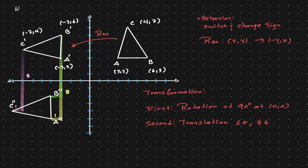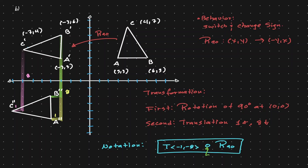Because the whole triangle had the same movement, we can say there was a translation of 8 units down and 1 unit to the left. So we have identified both transformations. Let's express this using the correct notation: first a rotation of 90 degrees, and then followed by a translation of 1 unit to the left and 8 units down. Here we have our symbol of composition — on the right-hand side of that symbol we have our first transformation, and on the left-hand side we have our second transformation.